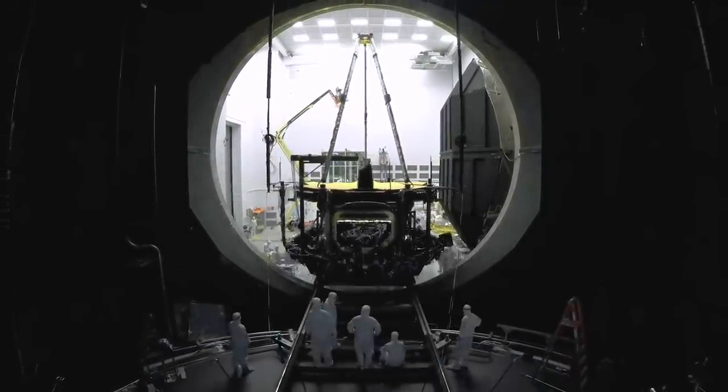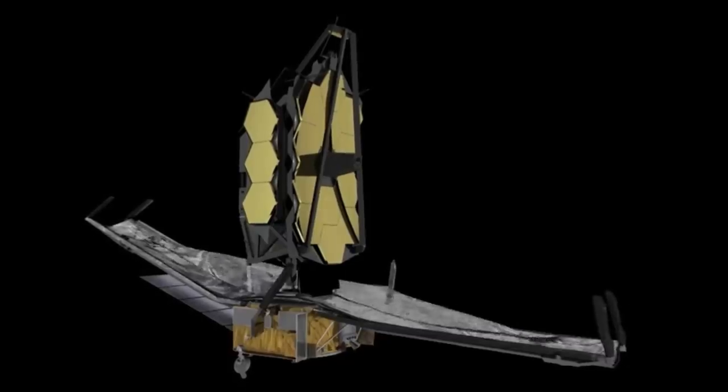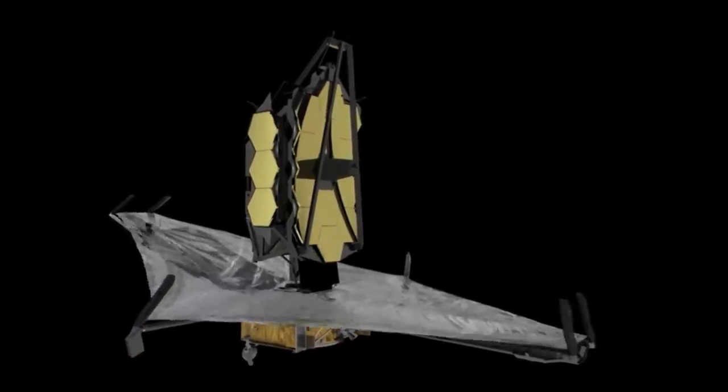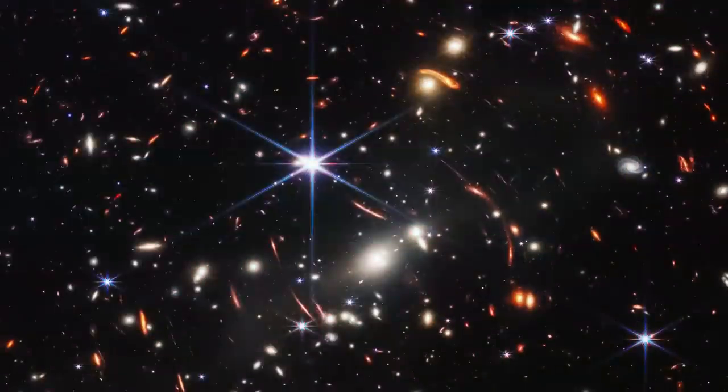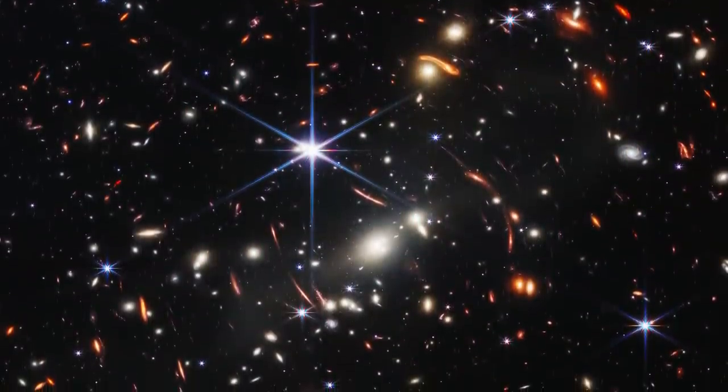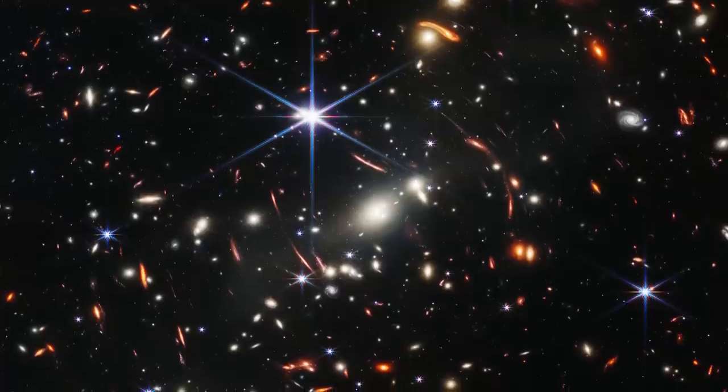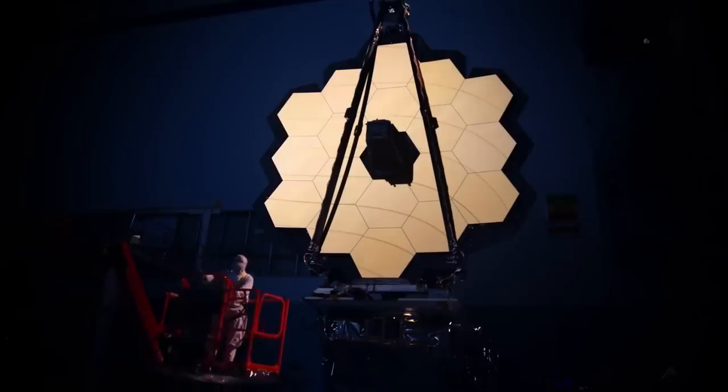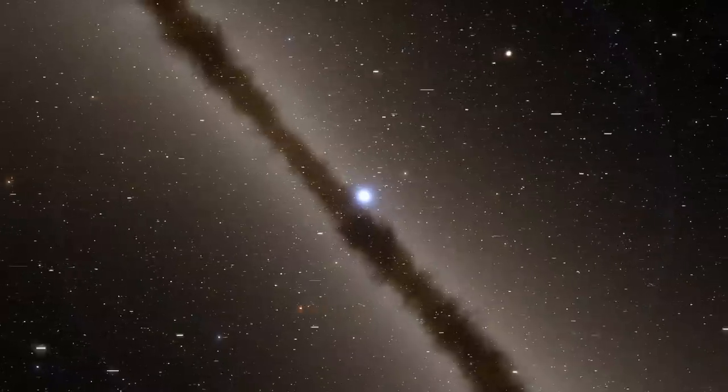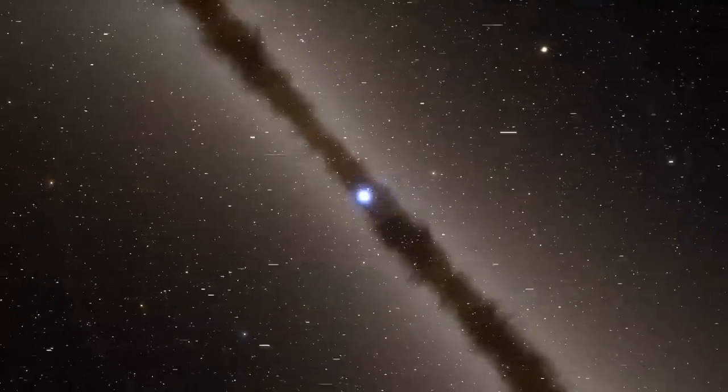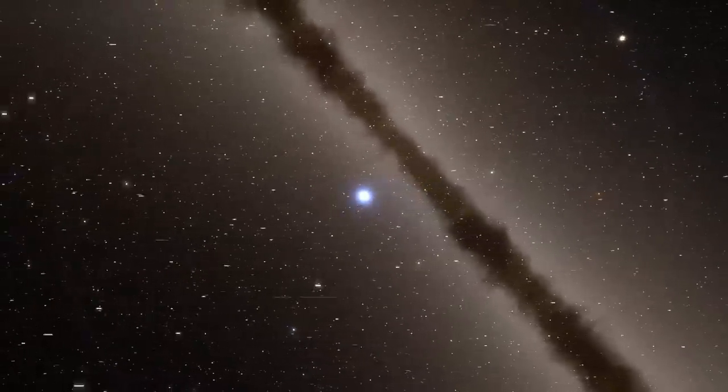The James Webb Space Telescope's main objective is to look back in time and try to discover the earliest galaxies that formed after the Big Bang. The first image from the telescope is the farthest that humanity has seen in both time and distance, closer to the dawn of time and the edge of the observable universe. The sharp near-infrared image brought out faint structures in extremely distant galaxies, giving us the most detailed view of the early universe that we have ever seen.